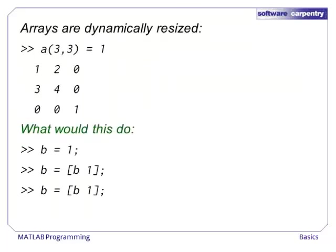Arrays can also be dynamically resized. If an element is assigned beyond the bounds of the current array, the array is filled with zeros for all spots that need to be created. Keep this in mind if you assign a zero to, say, the millionth column of an array. MATLAB is going to create one million columns of zeros in order to have space for the new element.